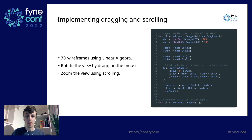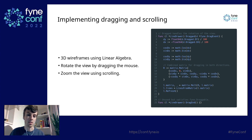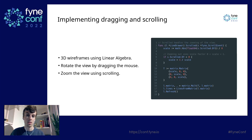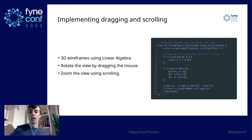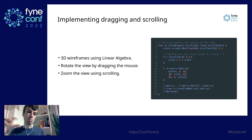Since fyne.Draggable requires both Dragged and DragEnd methods, we add DragEnd even though it doesn't need to do anything here, to satisfy the interface. For the Scrolled method implementing fyne.Scrollable, we take the scroll event and modify it to get values within the correct range for our identity matrix, which we then use to scale all our points. Finally, we call Refresh on the widget.